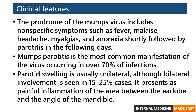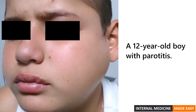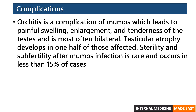Parotitis presents as painful inflammation of the area between the earlobe and the angle of the mandible. Orchitis is an inflammation of the testes and is a complication of mumps, which leads to painful swelling, enlargement and tenderness of the testes, and is most often bilateral. Testicular atrophy develops in one-half of those affected. Sterility and subfertility after mumps infection is rare and occurs in less than 15% of cases.